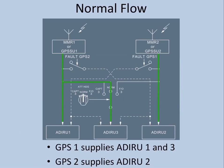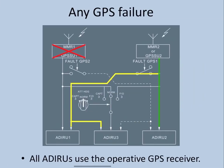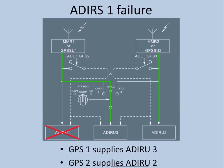In normal flow, GPS 1 provides to ADIRU 1 and 3, and GPS 2 provides to ADIRU 2. In case any GPS fails — as shown on the diagram where GPS 1 has failed — the operative GPS (in this case GPS 2) will provide to all three ADIRUs. Green is the normal flow and yellow is the alternate flow.